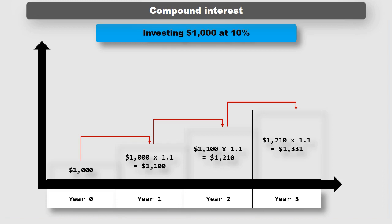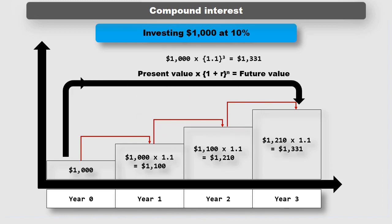This calculation can be done in one go, as follows: a thousand dollars times 1.1 cubed equals one thousand three hundred and thirty one dollars. Or, in general terms, the present value times (1 + r) to the n equals future value, where r is the annual rate of interest and n is the number of years.